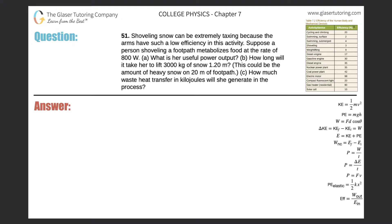Number 51: Shoveling snow can be extremely taxing because the arms have such a low efficiency in this activity. Suppose a person shoveling a footpath metabolizes food at the rate of 800 watts. Letter A: What is her useful power output?